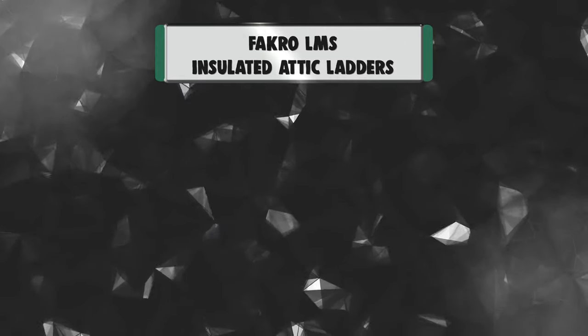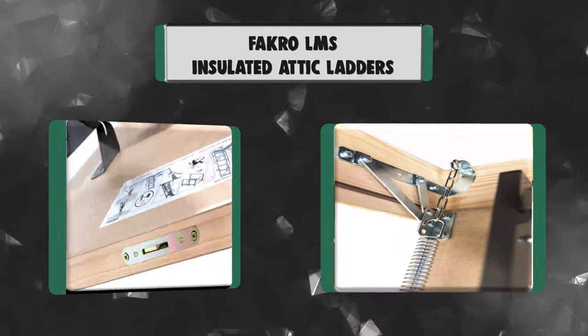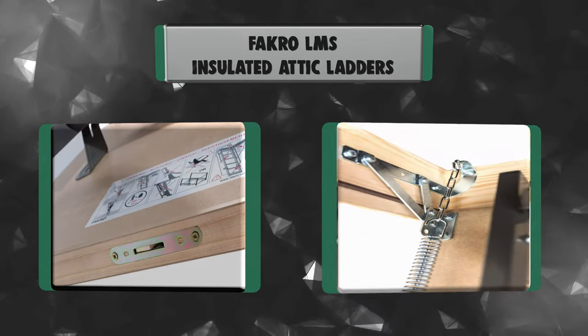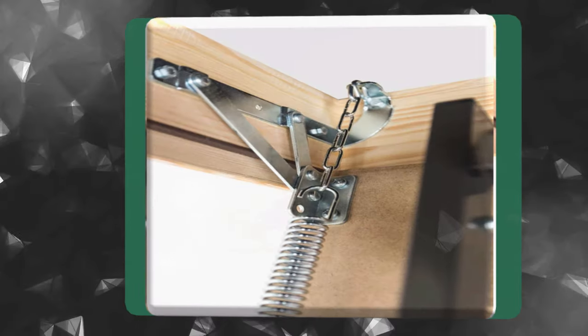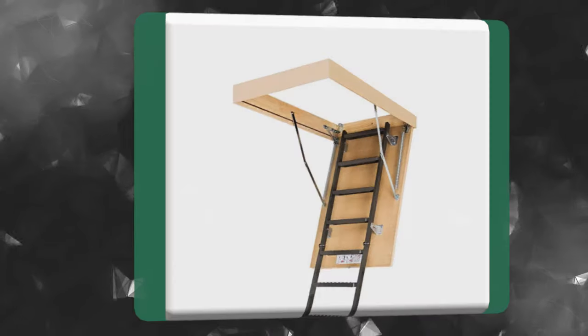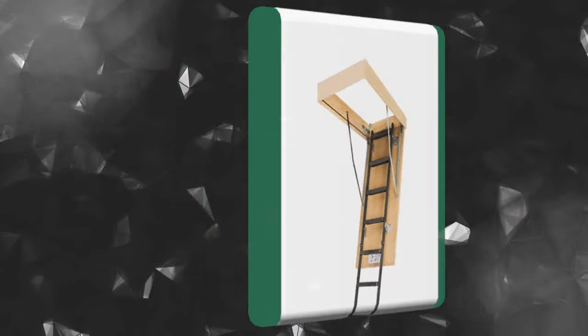Number 3. FACRO LMS insulated attic ladders. Enjoy safe access to your attic space with this FACRO LMS steel insulated attic ladder, which fits into rough openings measuring 30x54 inches and is designed for the ceiling. Satisfying all technical and safety requirements, FACRO folding attic ladders maximize ease of use and comfort without the need for installing costly additions.